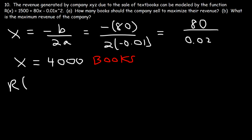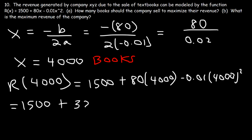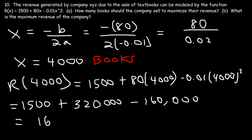Part B: what is the maximum revenue? Plug x = 4,000 into R(x): 1500 plus 80 times 4,000 minus 0.01 times 4,000 squared. 80 times 4,000 equals 320,000. 4,000 squared is 16,000,000, times 0.01 equals 160,000. Adding: 1,500 plus 320,000 minus 160,000 equals 161,500. The maximum revenue is $161,500.